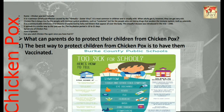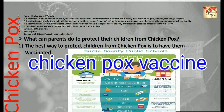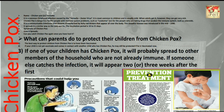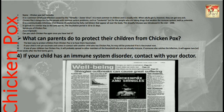What can parents do to protect their children from chickenpox? First, the best way is to have them vaccinated with the chickenpox vaccine. Second, if your child is not yet vaccinated and comes into contact with another child who has chickenpox, they may still be protected if vaccinated promptly. Third, if one of your children has chickenpox, it will probably spread to other household members who are not already immune — the infection appearing two or three weeks after the first case. Fourth, if your child has an immune system disorder, contact your doctor.